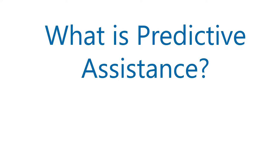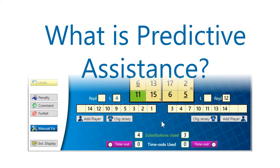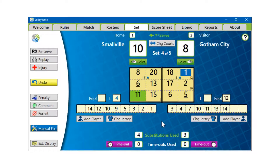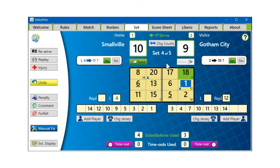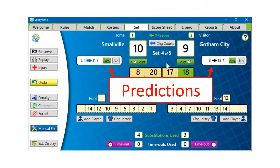So what is Predictive Assistance? After a full rotation, VolleyWrite prompts you to enter the same substitutions and Libero replacements that were entered during the previous rotation.